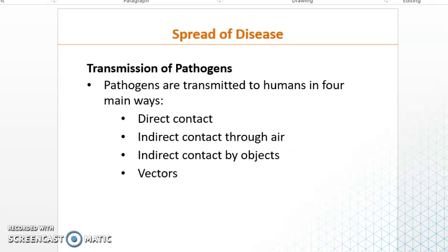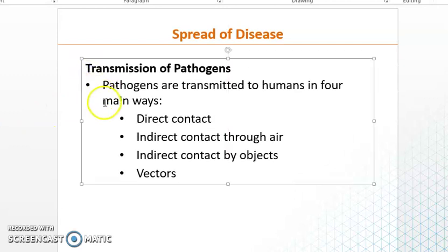Today we'll continue talking about the spread of disease — specifically the ways of transmission. We talked about the reservoir last time, and today we'll talk about the ways of spread. There are basically four ways of spread. For any pathogen to transmit to humans it needs one of these four ways: direct contact, direct contact through air, direct contact by objects, or through a vector.